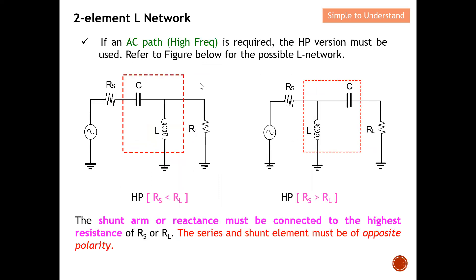If a high frequency AC path is required, the high pass version must be used. Again there are two possible high pass L network configurations. When elements are in series the RS is typically the smaller value, and when they are in shunt the RL is the larger value. To choose which configuration to use, you need to determine the values of RS and RL.